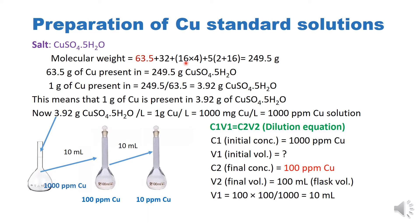The first step is to calculate the molecular weight by adding the atomic weight of different elements in this salt. 63.5 is the atomic weight of copper, 32 is the atomic weight of sulfur, and 16 is the atomic weight of oxygen. Because we have four oxygen molecules we multiply by four. We have five molecules of water; in water hydrogen's atomic weight is one, and because we have two hydrogen atoms we multiply by two, giving two for H₂, plus 16 for oxygen.